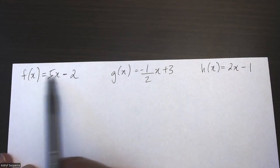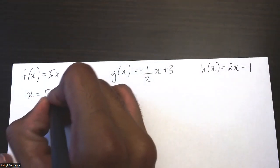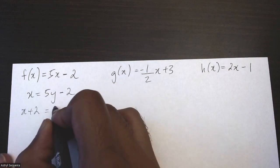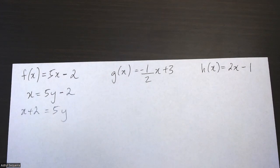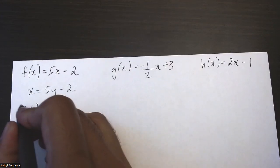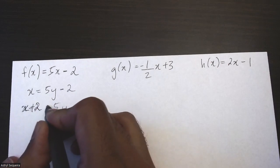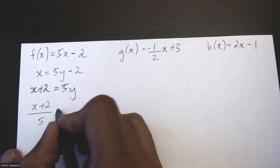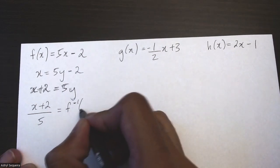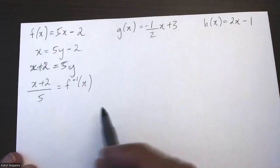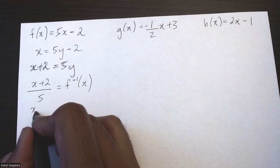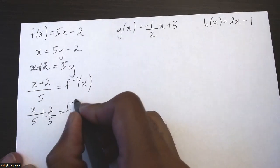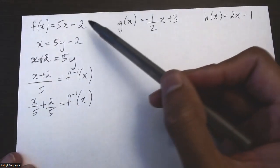Let's start with the first example. I want to find the inverse of this function, so I'm going to flip my x and my y, giving me x equals 5y minus 2. Then I isolate y: x plus 2 equals 5y, and dividing by 5 gives x plus 2 over 5 equals y. So f inverse of x is (x+2)/5. I'll split this denominator to make it easier to sketch.